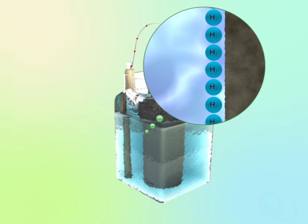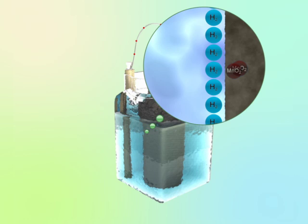The depolarizer in the Leclanché cell is manganese dioxide that reacts with hydrogen to form water molecules. This process prevents the galvanic cell from dying.